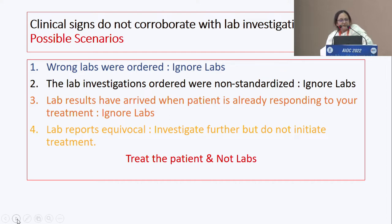The second scenario is that the lab investigations were ordered but were non-standardized. This used to happen a lot with TB — ELISA for TB positive, probably everybody is positive. But if it's not a standardized lab, just ignore the labs.